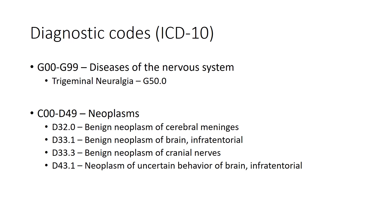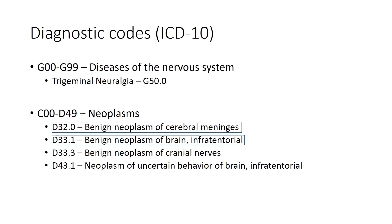The primary diagnosis in this case is a neoplasm in the cerebellar pontine angle, and so under the section on neoplasms from C00 to D49, we have several codes which could be selected. Because this appears to arise from the tentorium and have the appearance of a meningioma, either D32.0 benign neoplasm of cerebral meninges or D33.1 benign neoplasm of the brain infratentorial could be selected. If this appears to be a tumor arising from the nerve sheath of either cranial nerve 5 or the cranial nerve 7-8 complex, then D33.3 benign neoplasm of the cranial nerves could be selected. In this case we will select D32.0 benign neoplasm of the cerebral meninges.